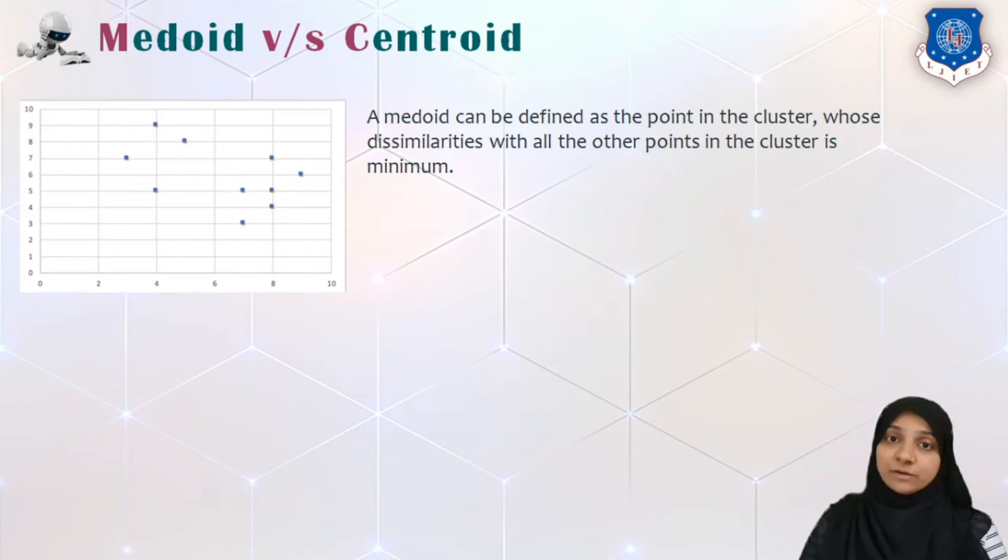Now this medoid method, how is it different from centroid method? A centroid is nothing but a mean of set of data points in a given cluster, whereas a medoid is a point in a cluster which is just similar to all other points in another cluster with its minimum similarity. As well as the medoid is a data point itself from a set of clusters which are belonging to a same cluster instead of calculating the mean. Let us see how medoid works.